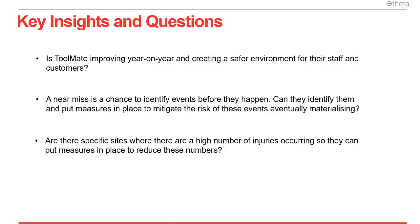Some key questions Toolmate needed answering included: Is Toolmate improving year on year and creating a safer environment for their staff and customers? A near-miss has a chance to identify events before they happen — can they identify them and put measures in place to mitigate the risk of these events eventually materialising? Are there specific sites where there are a high number of injuries occurring so they can put measures in place to reduce these numbers?